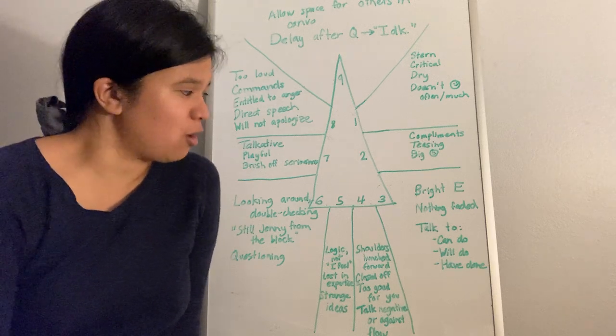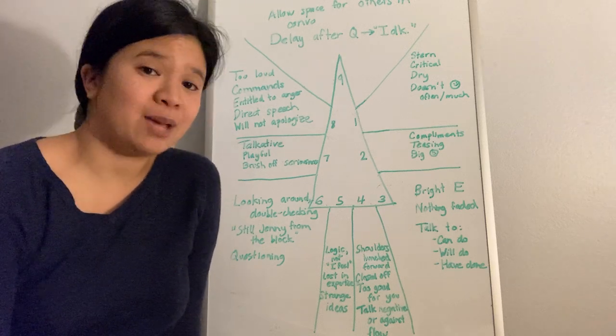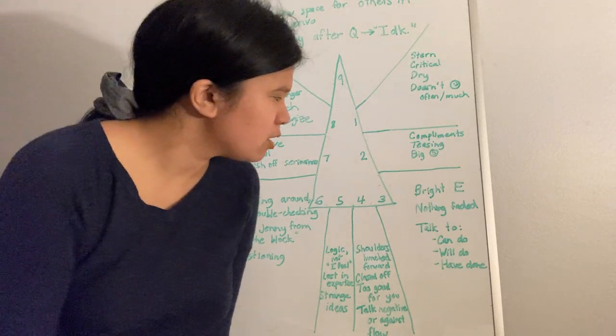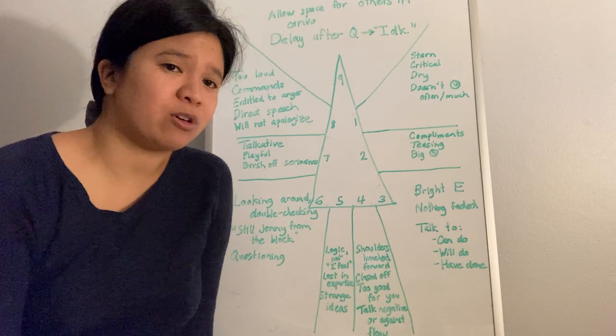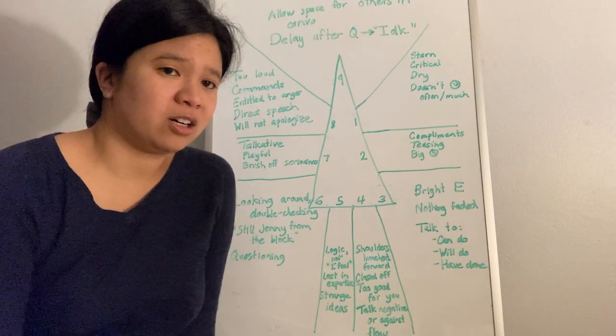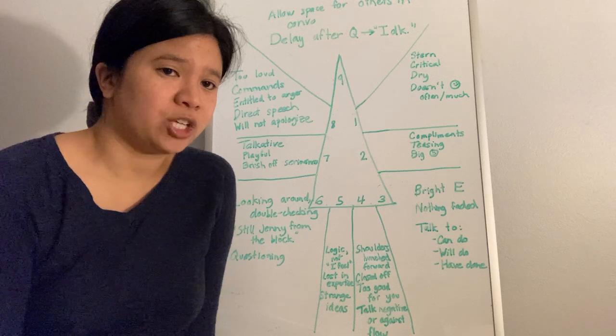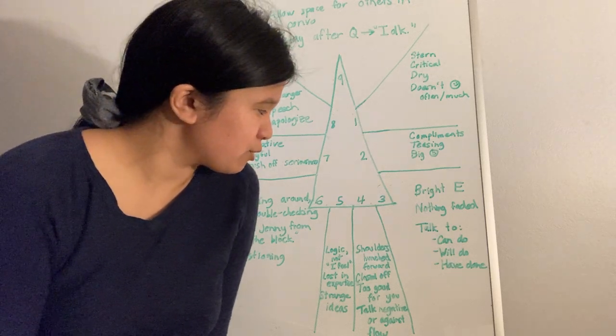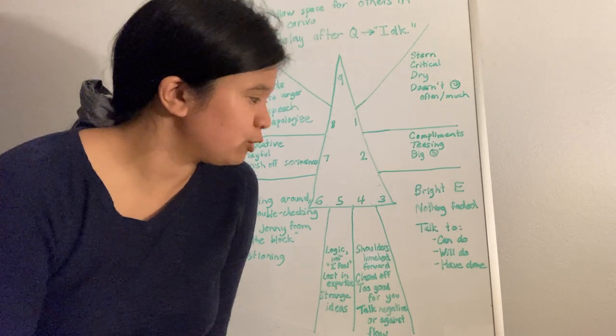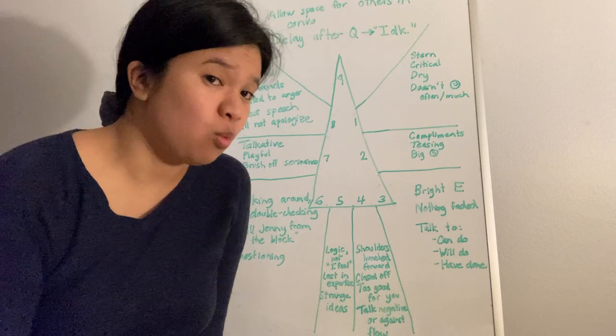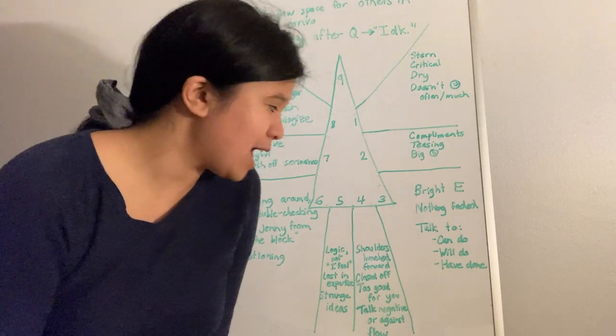Next in the heart triad, we have your type 3. Bright energy. Nothing faded. Maybe their clothes are always sharp looking. They are just kept in good condition. And 3's conversation will naturally flow to what the 3 can do, what the 3 will do, and what the 3 has done.